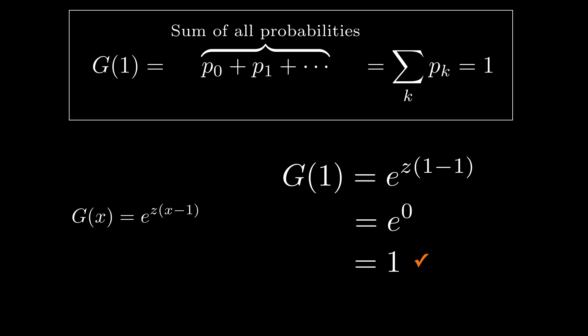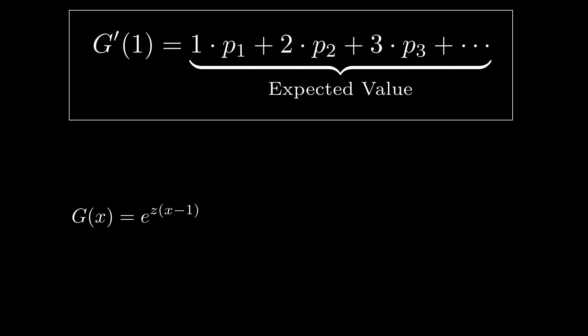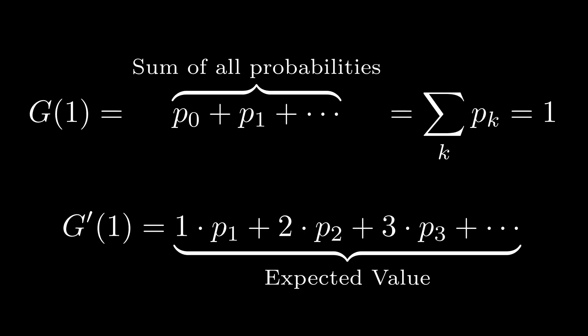So how about the expected value? What happens if we take a derivative and then plug 1 into x? This works too. We get the expected value. So at least for these two basic operations, it behaves exactly like the original generating function, although it is not a polynomial function.